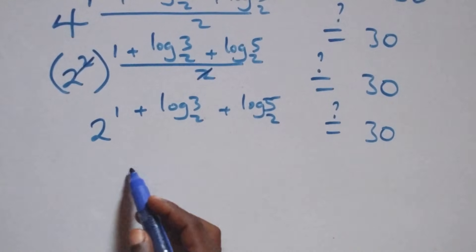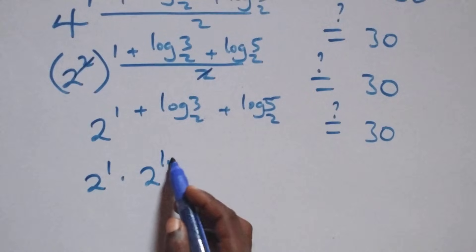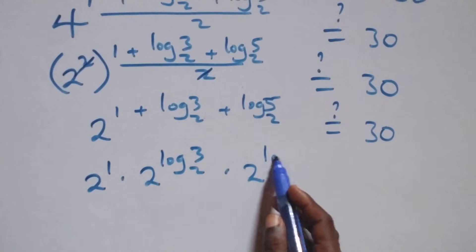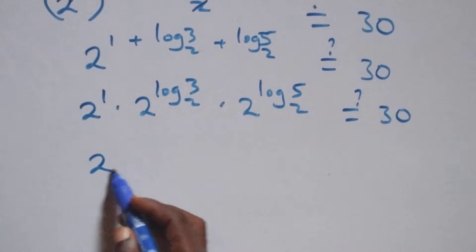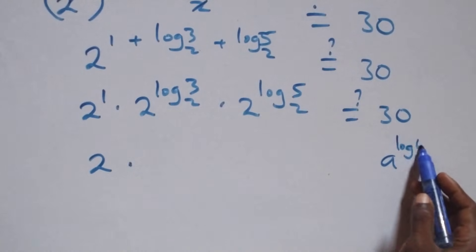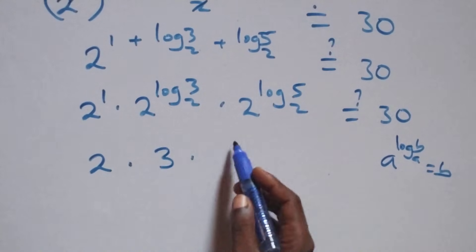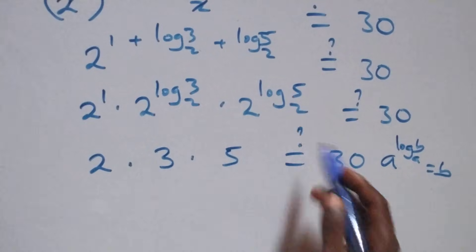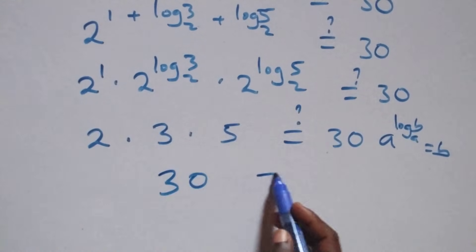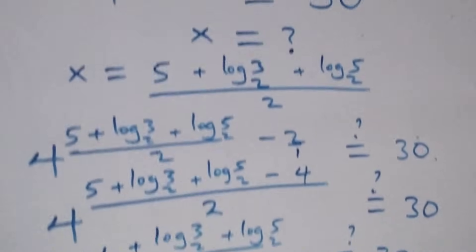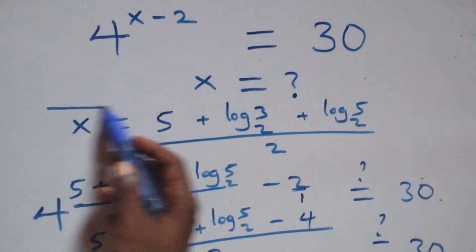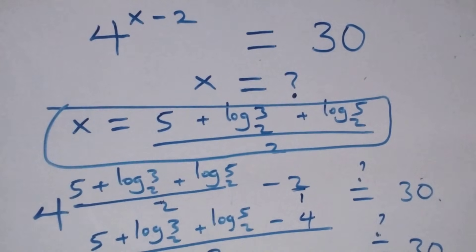Following the law of indices, we write this as 2 raised to power 1 times 2 raised to power log 3 base 2 times 2 raised to power log 5 base 2 equals 30. Using the identity a raised to log b base a equals b, this gives 2 times 3 times 5 equals 30. That is 6 times 5 equals 30, left hand side equals right hand side. Therefore, x equals (5 plus log 3 base 2 plus log 5 base 2) over 2 satisfies this problem. Thank you for watching!